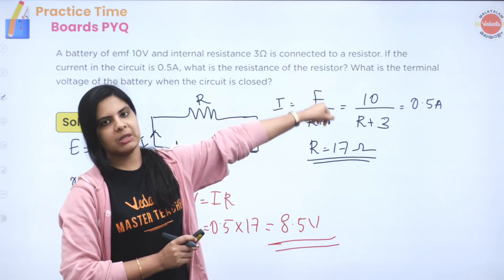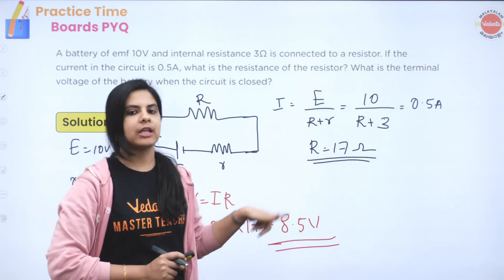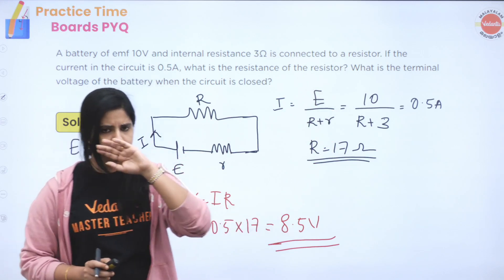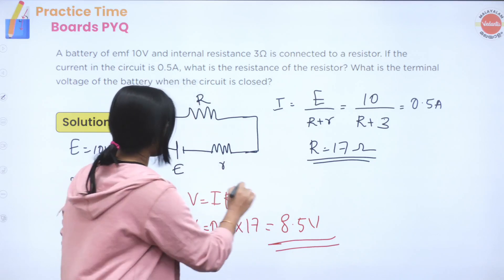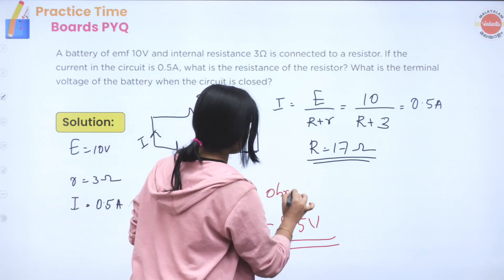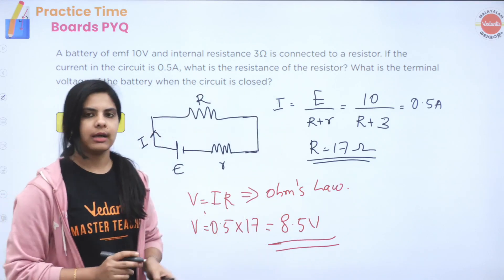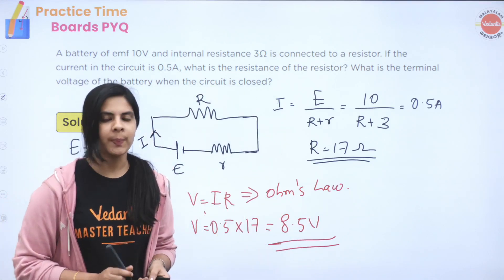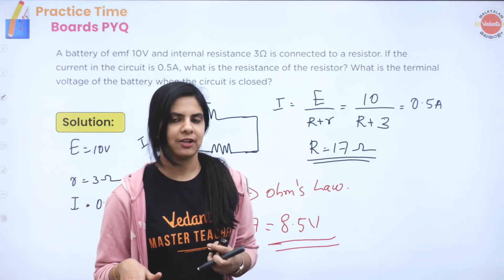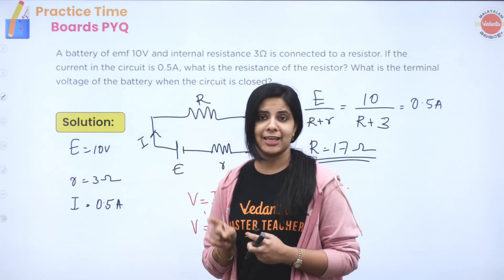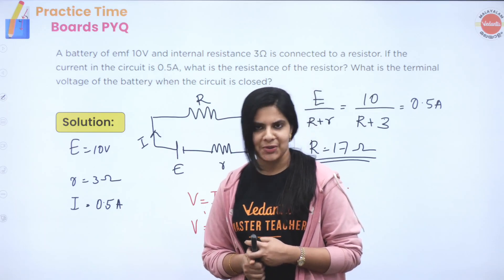To summarize: we used I = E/(R + r) to find the resistance, and then applied Ohm's law V = IR to find the terminal voltage of 8.5 volt. If this video is useful, please like, share, and subscribe to our channel. Thank you so much.